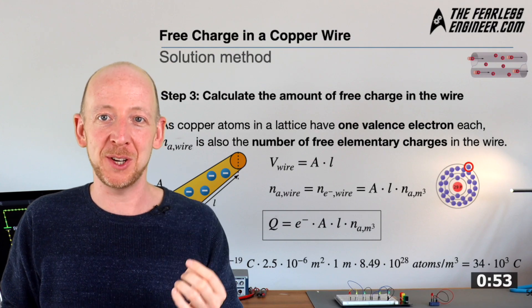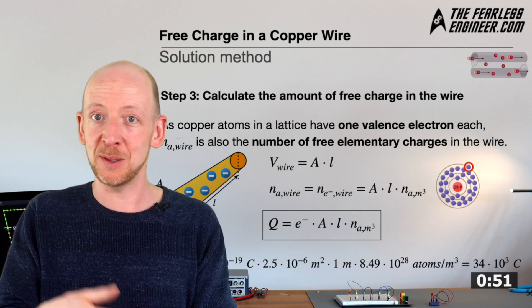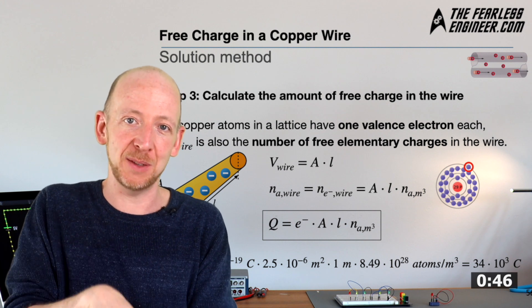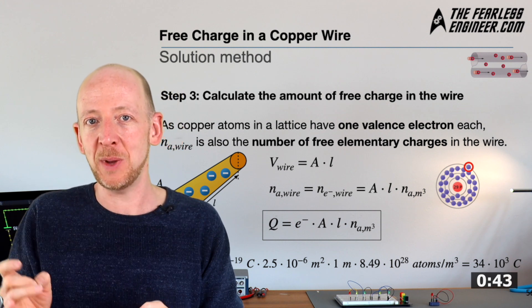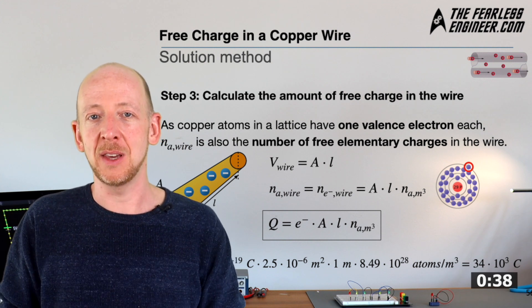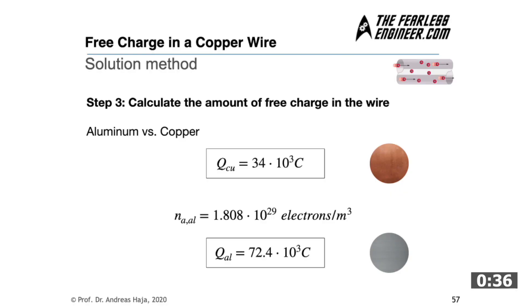And if you wanted to work out the number of charges, let's say, of a piece of aluminum wire instead of copper, you can do it the exact same way. You just take the atomic weight from the table of elements. You take the density, for example, from Google, and then you just have to recall that aluminum has three valence electrons instead of one which are released during bonding and which now form the electron gas cloud. And if you calculate correctly you will arrive at 1.808 times 10 to the power of 29 electrons per cubic meter for Na and a total charge of 72.4 times 10 to the power of 3 Coulomb for the aluminum conductor of the same dimensions, that is about twice as many free charges as for the copper wire.